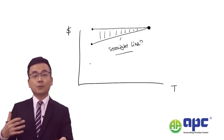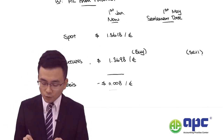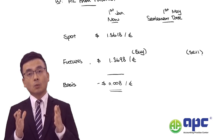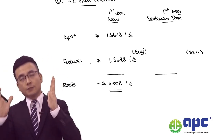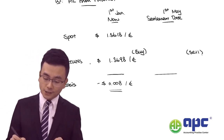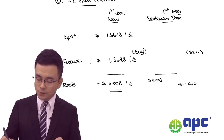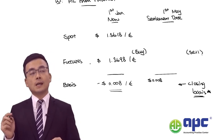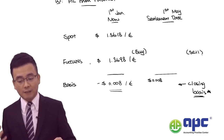Have you heard of the straight-line method? Similar to depreciation for property, plant and equipment — yes, that's right. So the 0.008 basis needs to be eliminated when the contract expires on 31st May. However, up until 1st May, we still have one month left before the contract actually expires. So I would say that the 0.008 closing basis — the difference between spot and futures price — is the amount still remaining on 1st May.